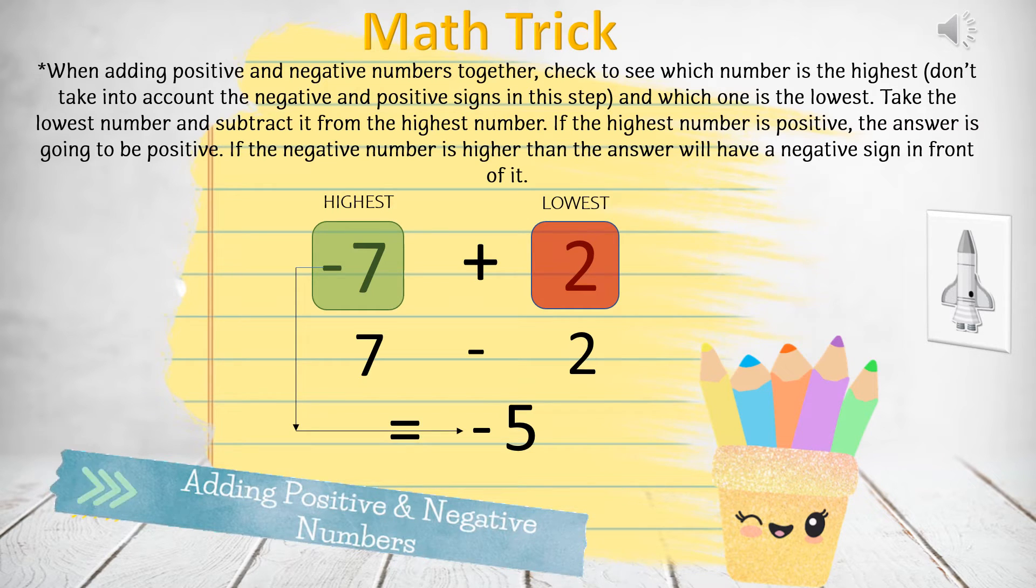So the answer to the equation negative 7 plus 2 equals negative 5.